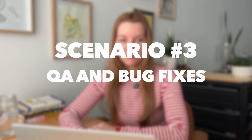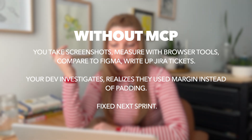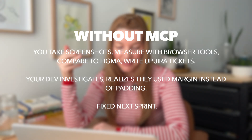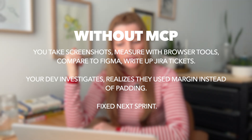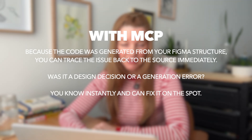Scenario three: MCP can help with QA and bug fixes. Imagine reviewing a new feature in staging and the spacing feels off but you can't quite tell why. Without MCP, you take a screenshot, measure with browser tools, compare to Figma, write up Jira tickets, your dev investigates, realizes they used margin instead of padding, and fixes it in the next sprint — delay. With MCP, because the code was generated from your Figma structure, you can trace the issue back to the source immediately and fix it on the spot.